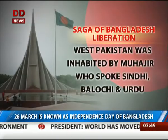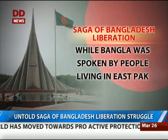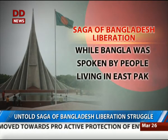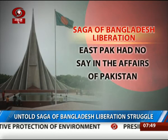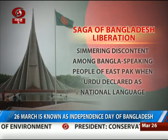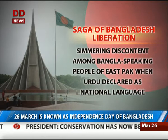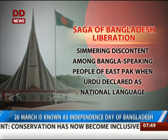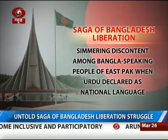West Pakistan was inhabited by Muhajirs, who spoke Sindhi, Balochi, and Urdu, while Bangla was spoken by people living in East Pakistan. East Pakistan did not have much say in the affairs of Pakistan, and this was the root of the simmering discontent among Bangla-speaking people of East Pakistan, that heightened with Urdu being declared as the national language.